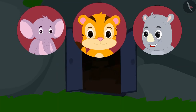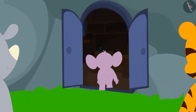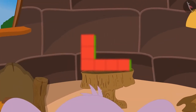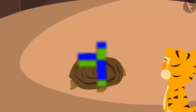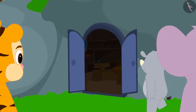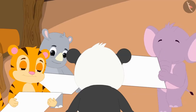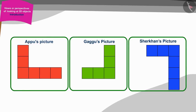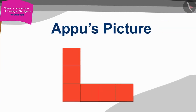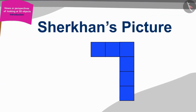The person whose picture most resembles Golu's shape will win. First, Appu saw the shape made by Golu and went and drew his picture. Then Shere Khan also went and saw the shape and made his picture. And finally, Gaggu went and saw the shape and made his picture. All three were shocked when they showed their pictures to Golu. The pictures made by the three of them were completely different. Appu's picture was like this. Gaggu made such a picture and Shere Khan's picture looked like this.